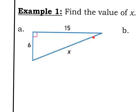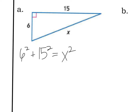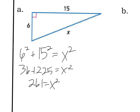In this first example, I'll start off solving for the hypotenuse because my right angle is here, pointing to the hypotenuse x. It doesn't matter what side is a or b — it just matters what side is c. c is always the hypotenuse. So you're going to do 6 squared plus 15 squared, set it equal to x squared. That gives me 36 plus 225 equals x squared. Add those together, you get 261 equals x squared. The most common mistake is getting to this point and just circling it as the answer — but you have x squared, not x.